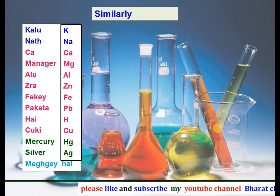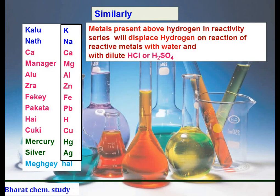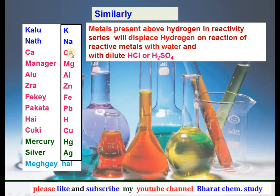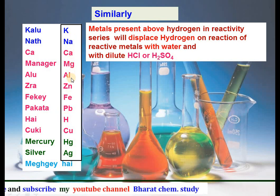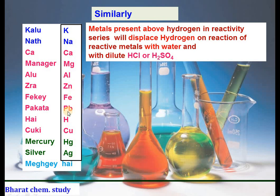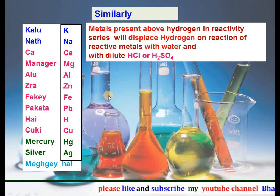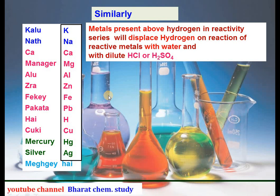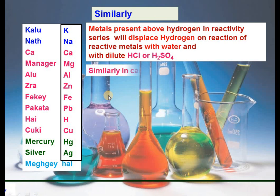All metals present above hydrogen in the reactivity series — potassium, sodium, calcium, magnesium, aluminium, zinc, iron, lead — will displace hydrogen, meaning they produce hydrogen gas when they react with water or with dilute acids like hydrochloric acid or sulfuric acid.